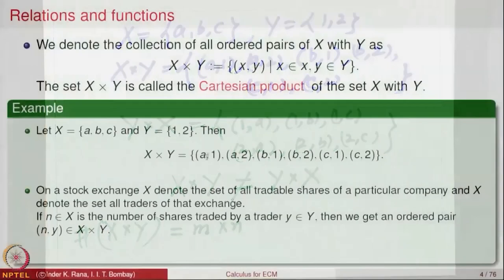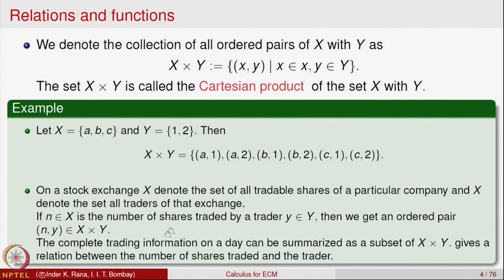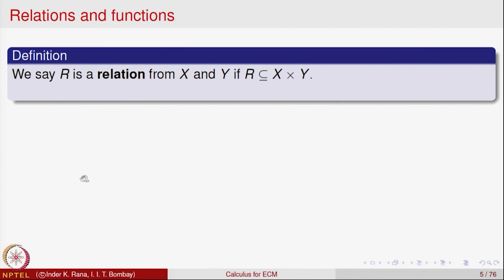The complete trading information on a day can be summarized as a subset of X cross Y, where X is the number of shares being traded and Y is the set of all traders. That is the importance of the Cartesian product X cross Y. Subsets of X cross Y signify some kind of relation or activity happening between elements of X and elements of Y. This motivates us to define the concept of what is called a relation.